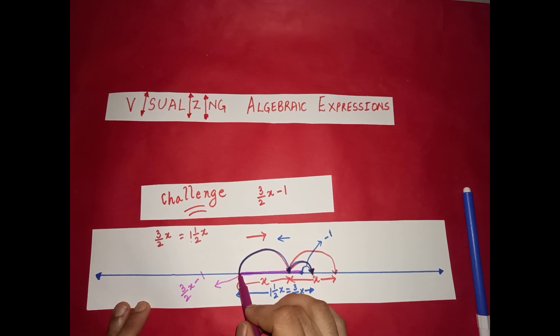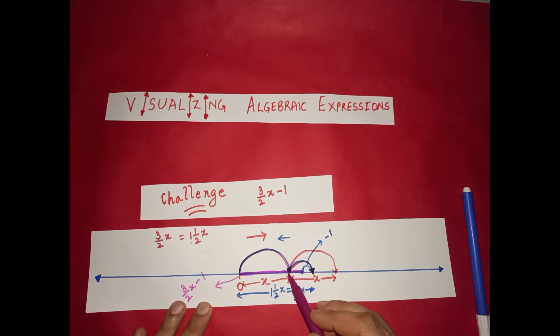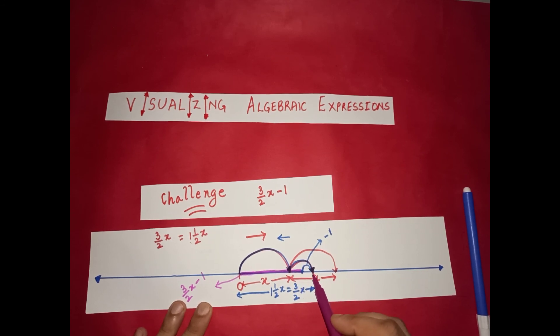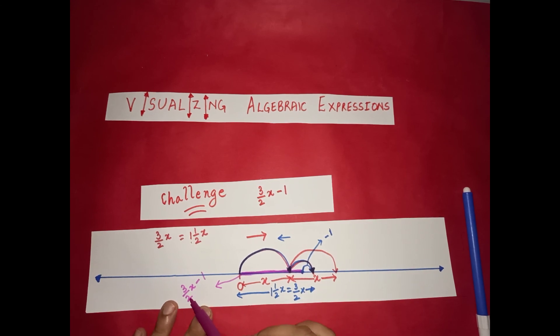This much distance is representing 3 over 2 x minus 1. Because this is 1 jump of x, then 1 jump of half x, and then we are coming back by 1 unit. So this is 3 over 2 x minus 1. So I hope it is clear.